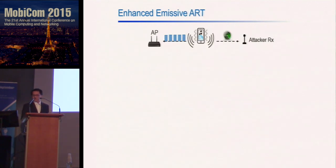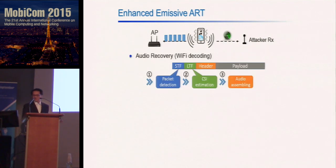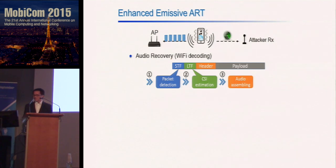Besides the reflective ART, we also have the emissive ART mechanism. In this scenario, the smartphone communicates with a nearby access point, and the attacker tries to recover audio by sniffing the outgoing packets from the smartphone. The audio decoding process follows a typical wireless decoding pipeline: first detect the packet, then estimate the RSS from the CSI, and finally assemble the audio signals.